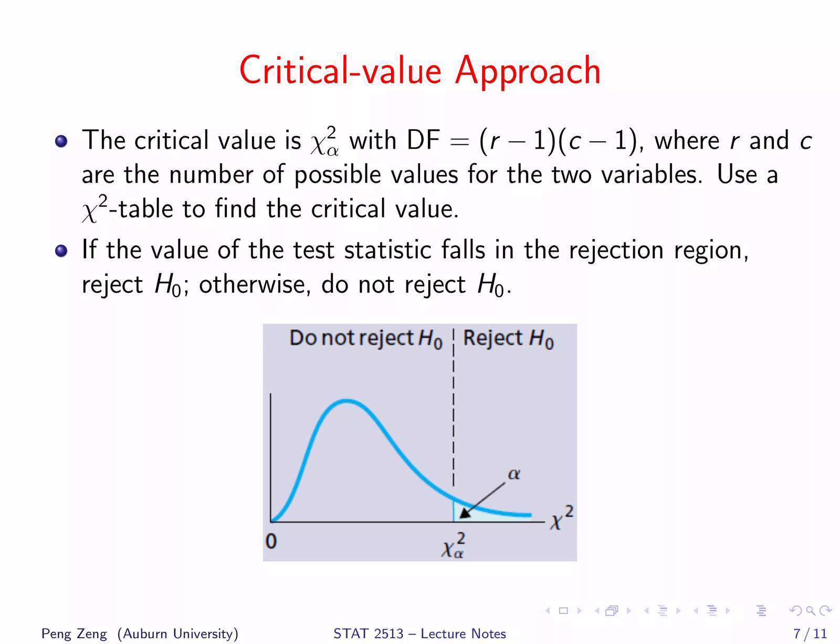Where R and C are the number of possible values for the two variables. We can use a chi-square table to find the critical value. The rejection region is always larger than the critical value. If the test statistic is larger than the critical value, we reject H-null; otherwise, do not reject H-null.